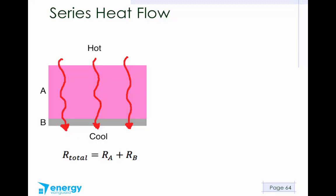Let's start with the easy case of series heat flow. This is where you have an assembly made up of different layers. The layers separate the hot side from the cool side, so the heat has to travel through every single layer from the hot side to the cool side.